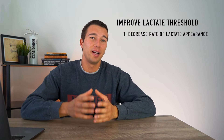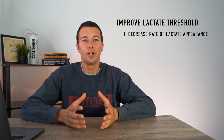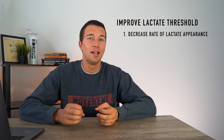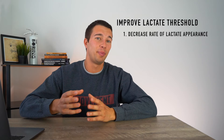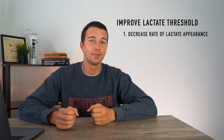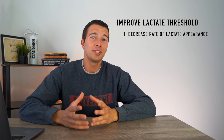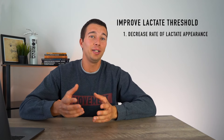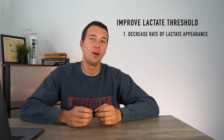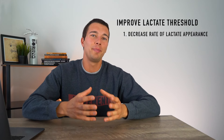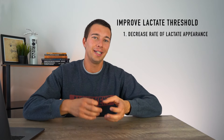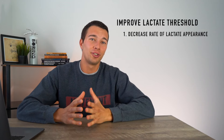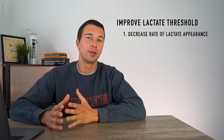For a marathon runner this might be long-distance base runs; for a cyclist this might be a two-hour base ride; and for someone just starting out it might be just adding a 30 to 60 minute daily walk. All of this aerobic base training will decrease the rate of lactate production and help us start to shift our lactate threshold up.